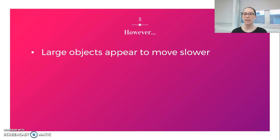Two objects moving at the exact same speed, one larger and one smaller, will be perceived as moving at different speeds. Large objects oftentimes appear to be moving slower than smaller objects.